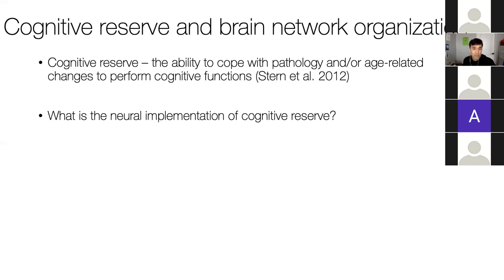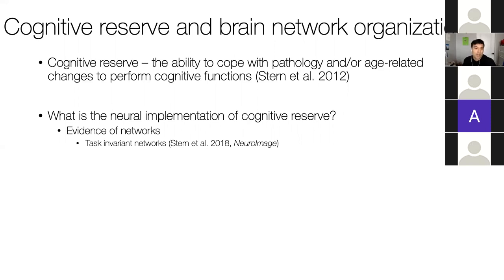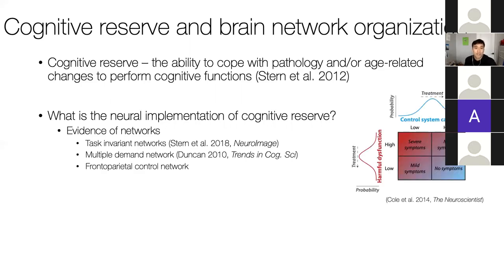An active area of research to understand cognitive reserve is understanding its neural implementation. There have been a number of works looking at networks such as task invariant networks by Jakob Stern et al., who identified a set of co-activated regions across multiple different tasks that correlated with individual differences. This notion is not dissimilar from other notions of task-positive networks such as the multiple demand network or the frontoparietal control network.